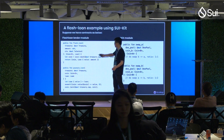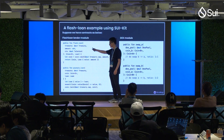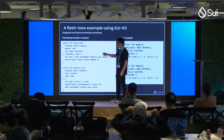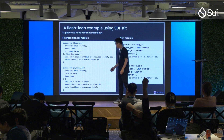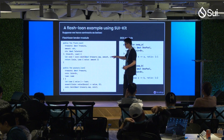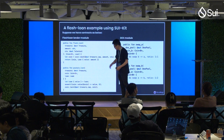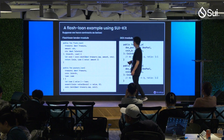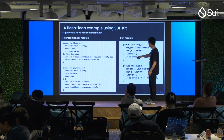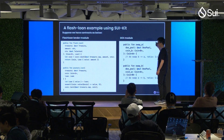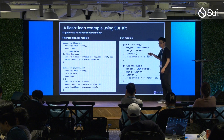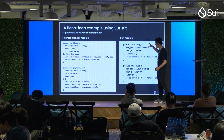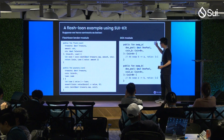The flash loan method accepts the amount you want to borrow and returns the coin you borrowed and a hot potato object called 'loan.' The repay flash loan method receives the coin debt you pay back and the hot potato loan object, and verifies whether you have paid enough for this flash loan. On the right side we have a DEX — a place where you can swap tokens. This DEX has two methods: swap A, which accepts a DEX pool and coin B, returning coin A at a one-to-one ratio; and swap B.